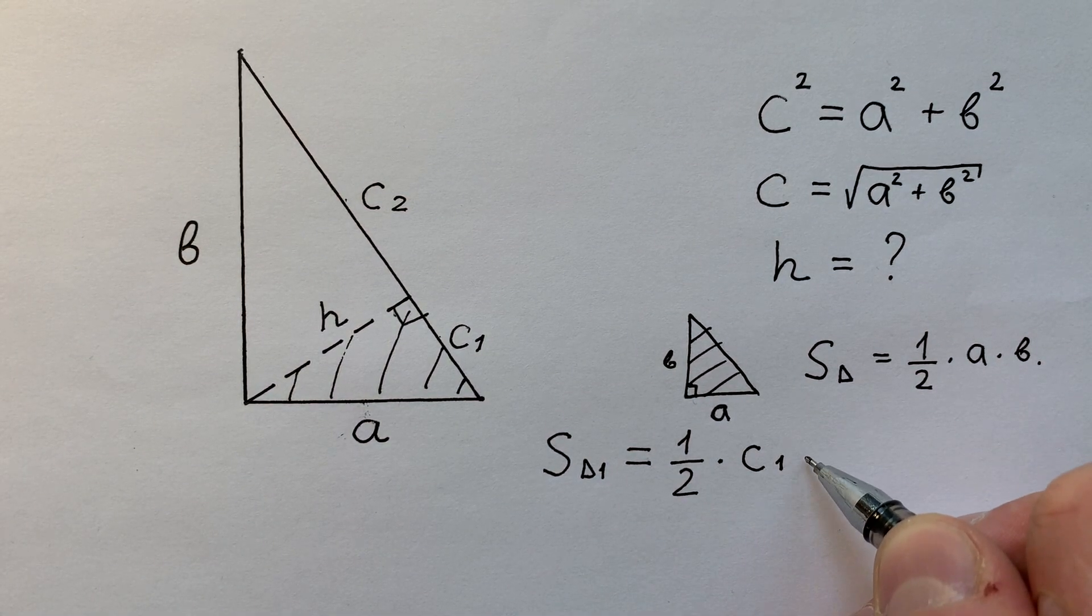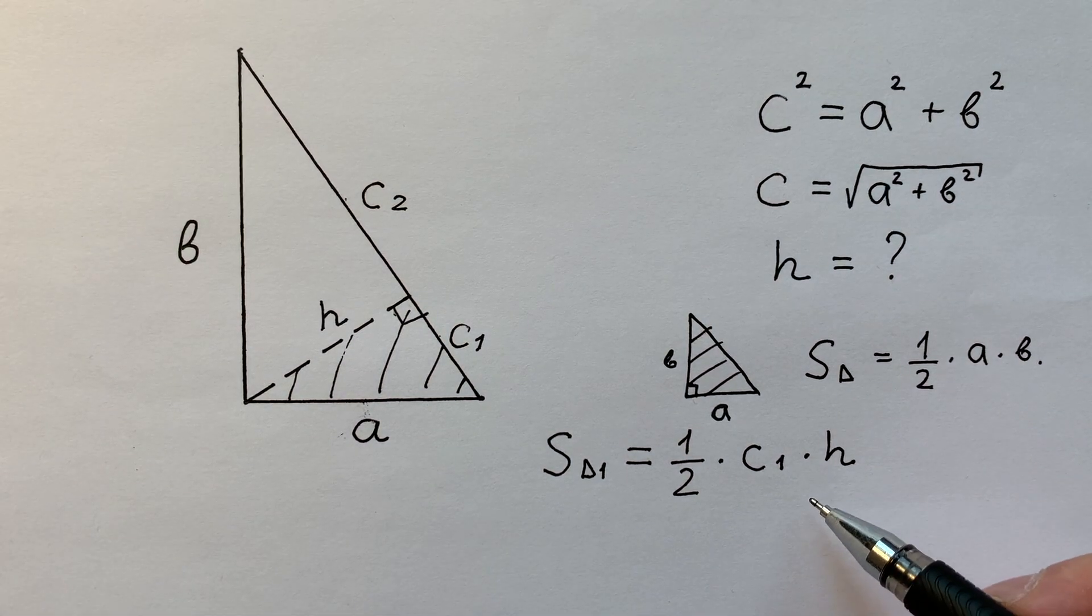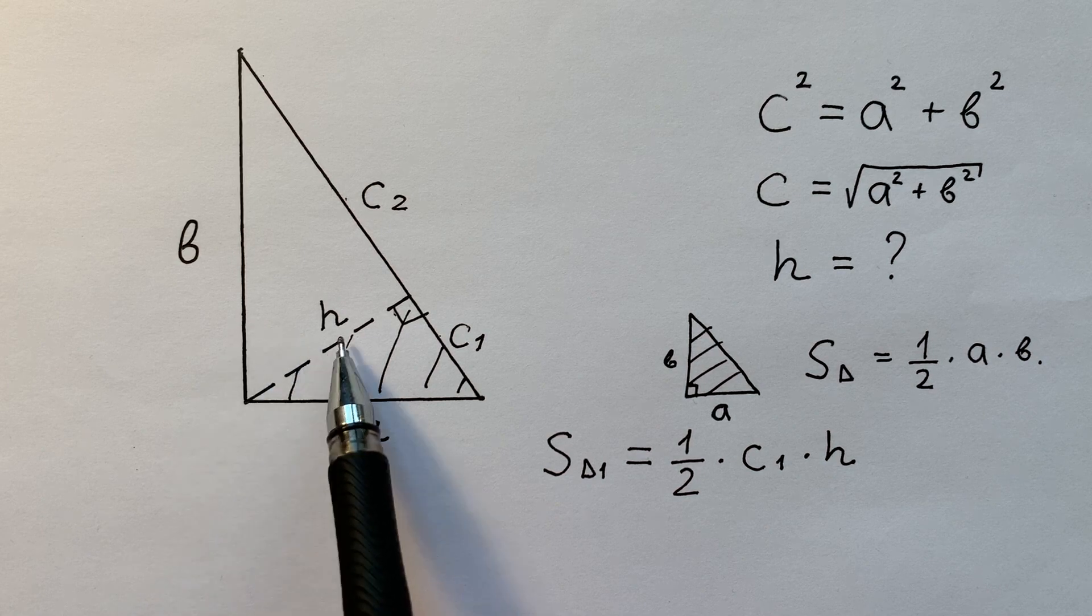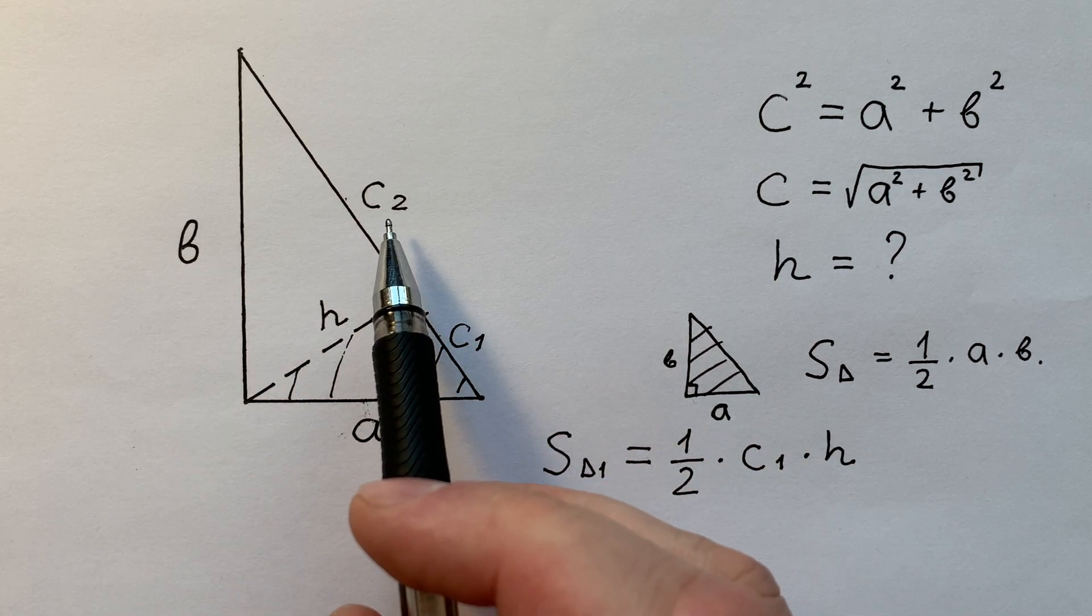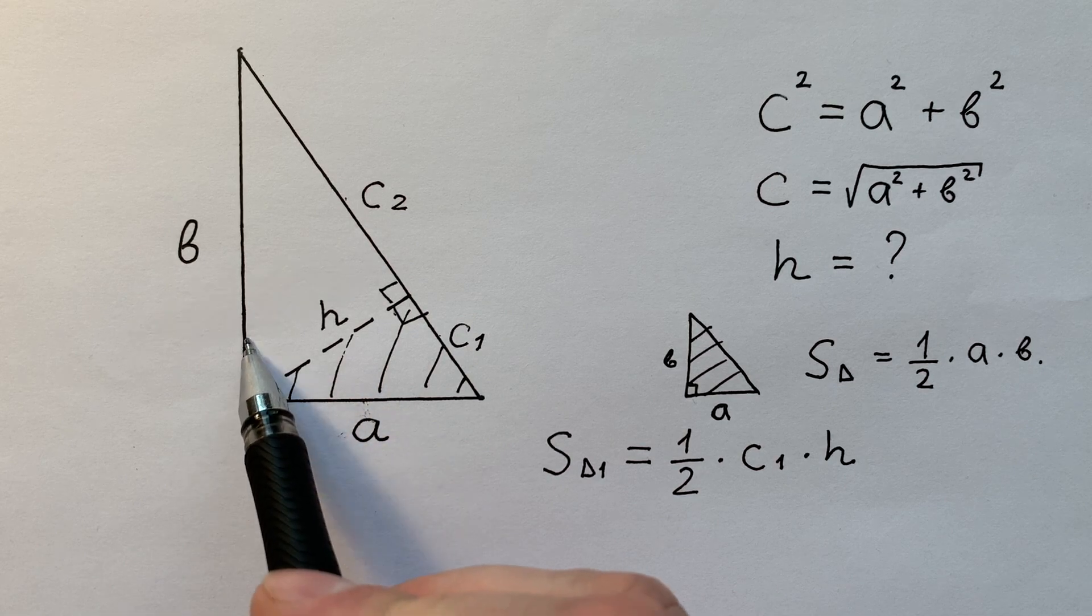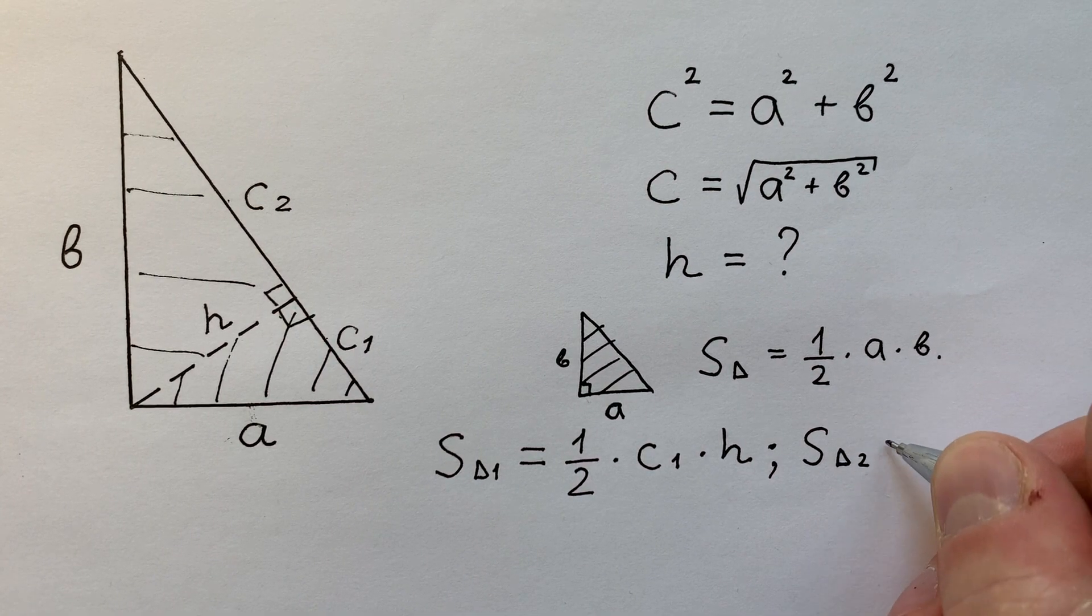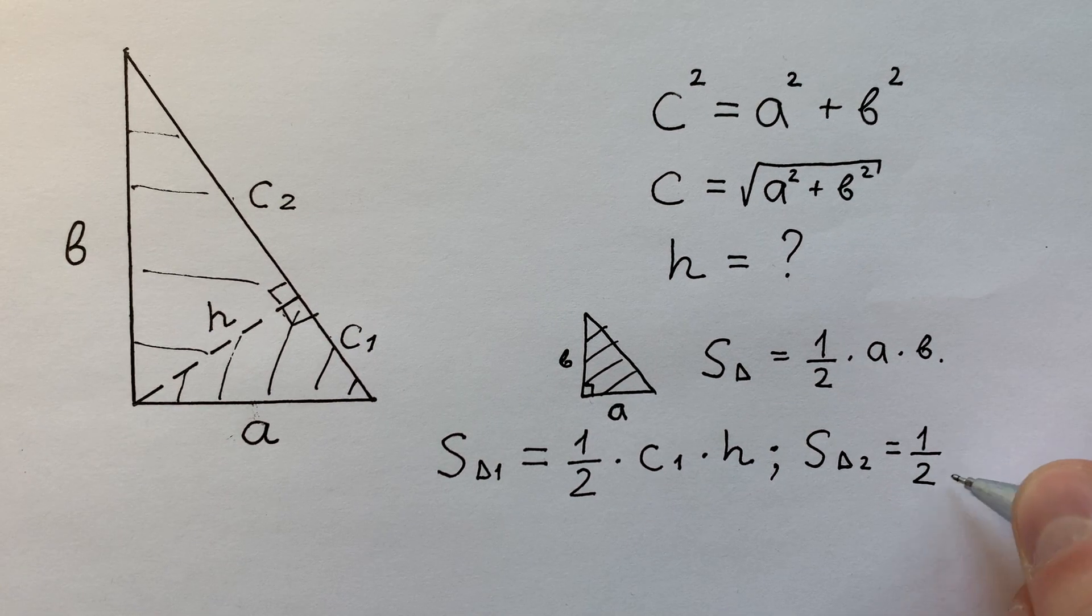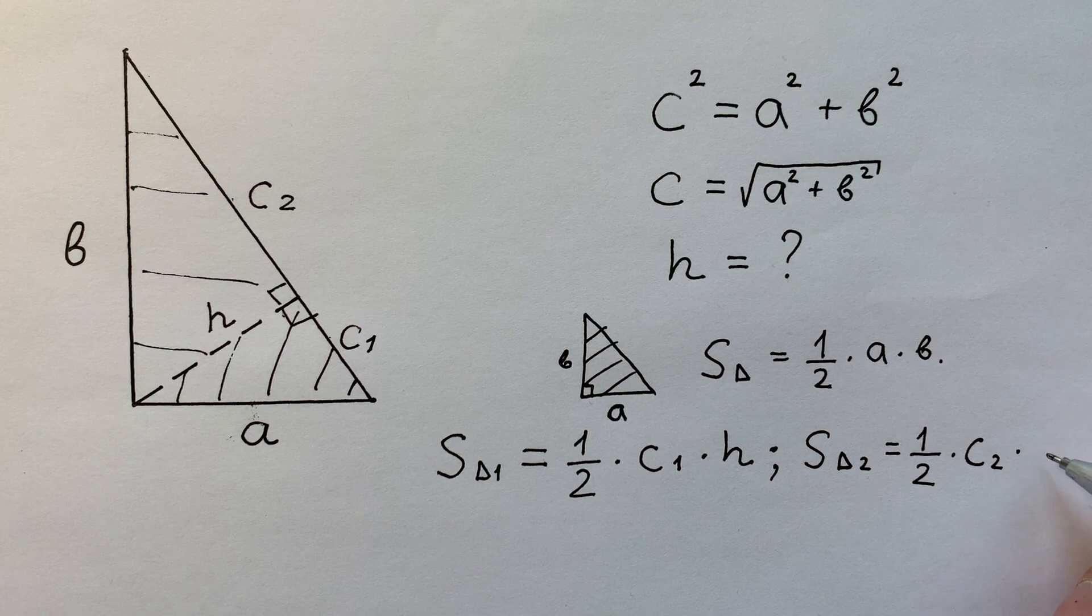The area of the second triangle equals one divided by two times cathetus C2 times cathetus H.